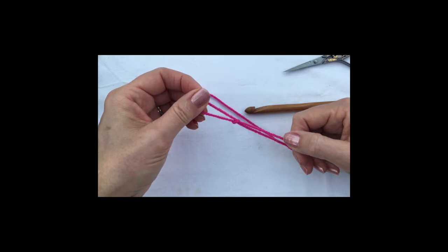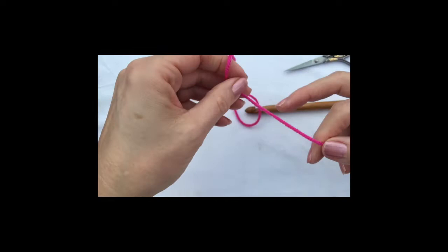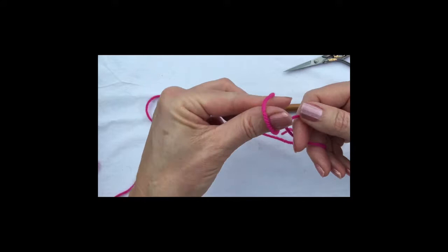So we start by creating a slip knot. One piece of yarn over the other, fingers through, pull it through to create your slip knot.